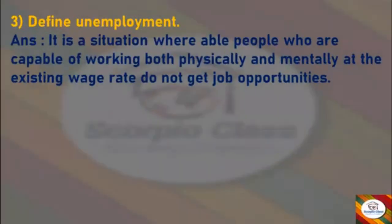Next question: define unemployment. Answer — it is a situation where able people who are capable of working both physically and mentally at the existing wage rate do not get job opportunities. Then it is called unemployment.